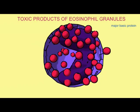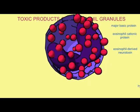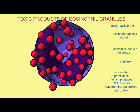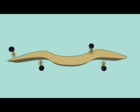When eosinophils degranulate, they release a wide range of toxic molecules. Some of these are enzymes which can digest protein. Some of these produce reactive oxygen species, which are toxic.